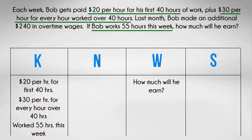Is there information that you do not need in order to solve the problem? You may notice that Bob made $240 in overtime last month — information not needed in order to solve the problem.